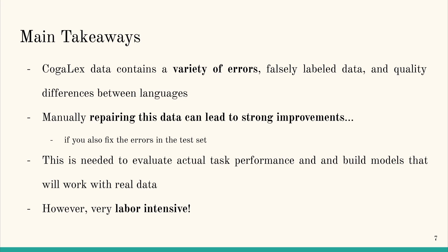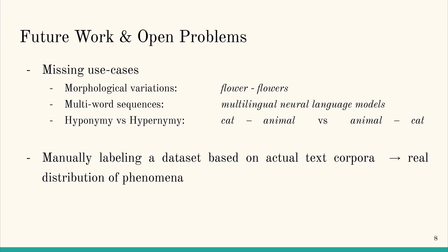Manual data correction is very labor-intensive — a combined total of around 70 hours of work were required to fix the dataset. For future work, we would like to add more multi-word terms, morphological variations, and a proper direction for hyponymy and hypernymy. For this, we would also like to manually label data based on actual text corpora to reflect the natural occurrence of these terms and patterns.